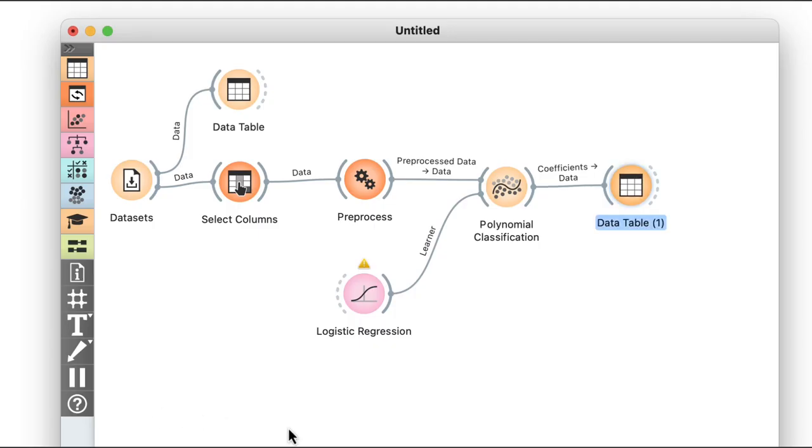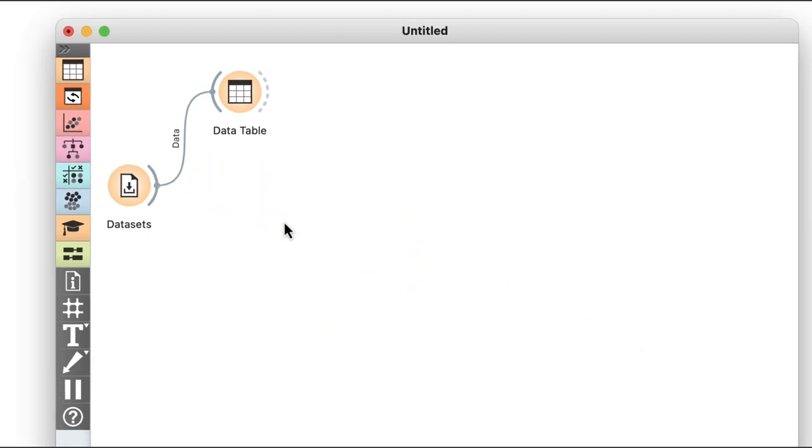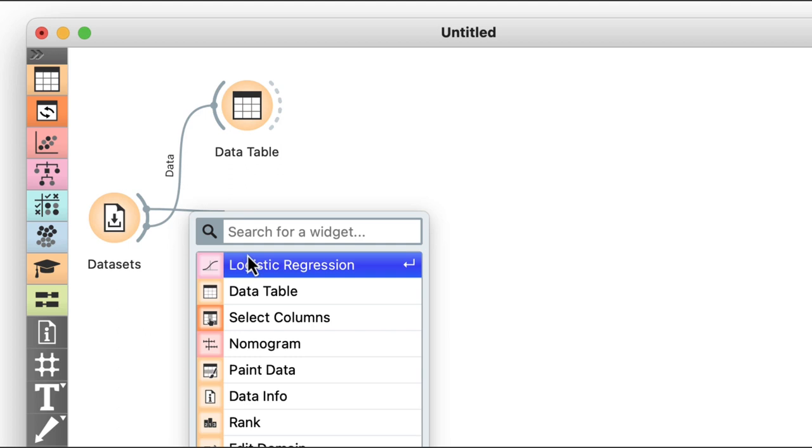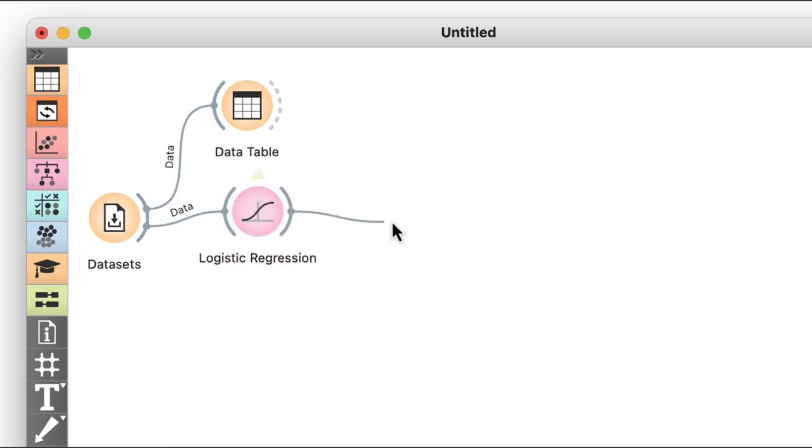We call this a nomogram of logistic regression. To construct one, let's remove everything except the data. Now we add in logistic regression and connect its output to the nomogram widget. There, I'll set the target class to attrition.